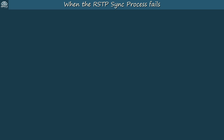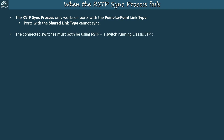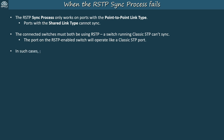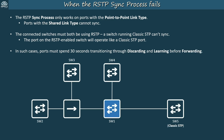Let's look at a couple of scenarios where the RSTP sync process fails and ports aren't able to immediately transition to the forwarding state. First, the RSTP sync process only works on ports with the point-to-point link type — ports using the shared link type cannot take advantage of RSTP's sync process. Second, the connected switches must both be using RSTP, since a switch running classic STP can't sync; the port on the RSTP-enabled switch will operate like a classic STP port instead. In such cases, ports must spend 30 seconds transitioning through discarding and learning before forwarding.